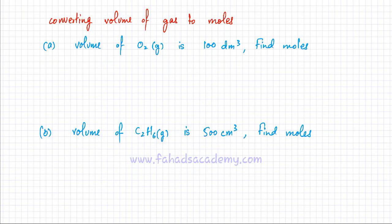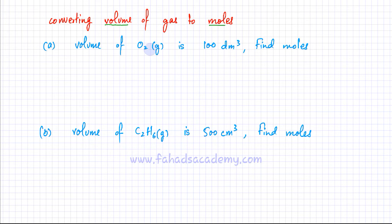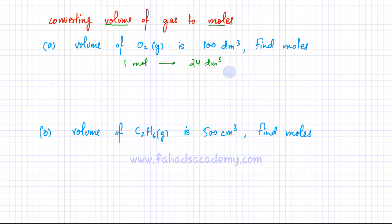In exactly the same way, we can go the other direction: if the volume of a gas is given, we can convert that back into moles. For example, the volume of a gas is given as 100 dm³ and I need to find the moles. Using ratios, one mole of gas occupies 24 dm³, so 100 dm³ of gas should contain x moles.